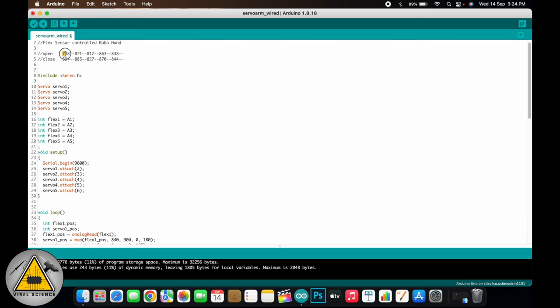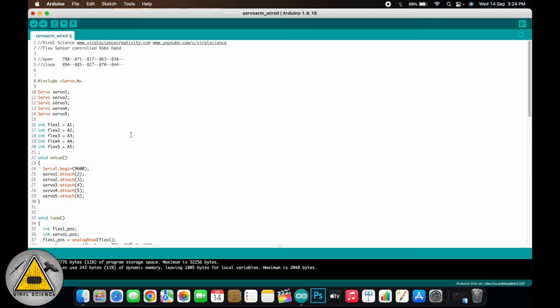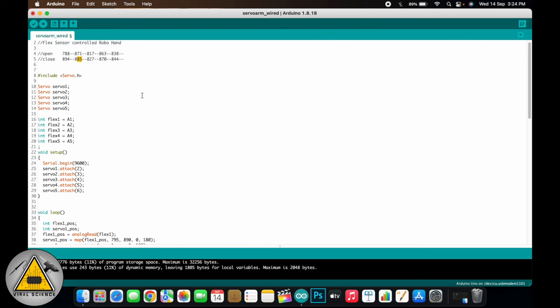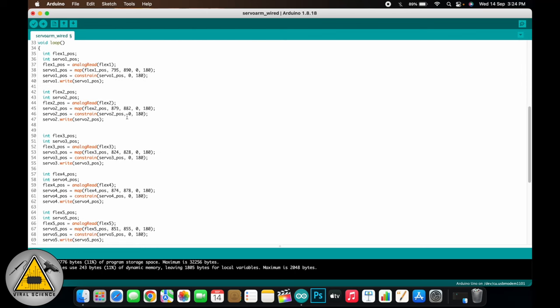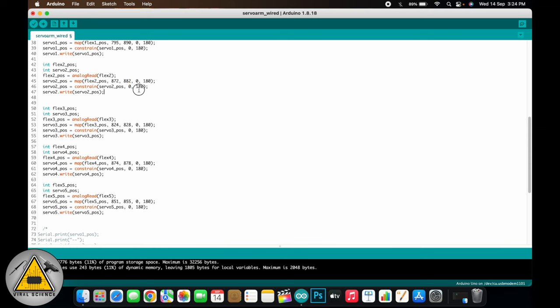So now we'll set the range of the flex sensors according to the input which we have got. So the first flex sensor has the range of 788 to 894. So we'll do plus and minus 5. So we'll set it to 795 to 890. Similarly, we'll do for the second one. If the range is less, then you can do plus and minus 1. So after doing it for all the flex sensors, we'll just simply upload the code.